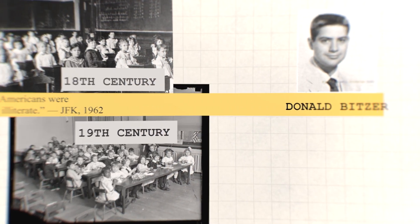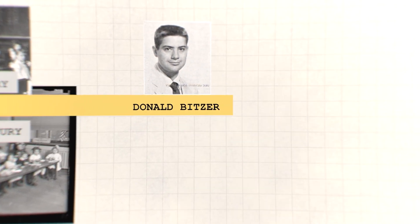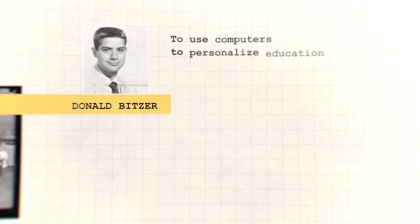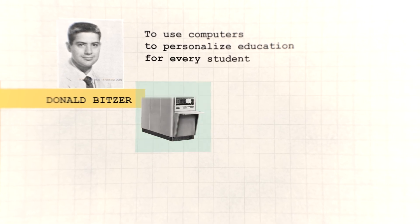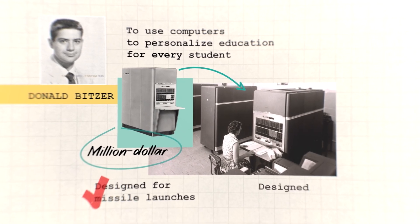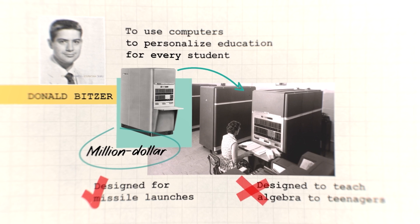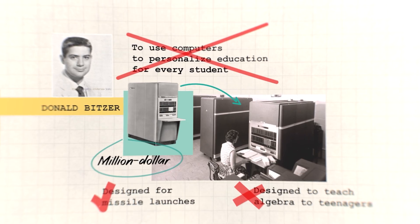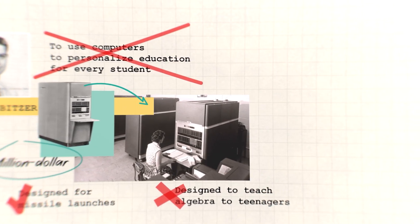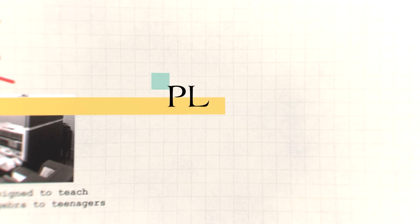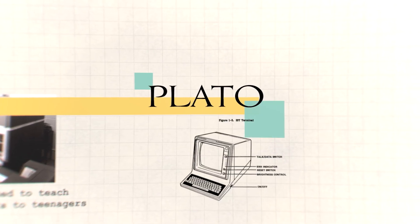A frustrated physics professor proposes a radical idea to a young engineer named Donald Bitzer: to use computers to personalize education for every student. But computers at this point are million-dollar room-size calculators designed for missile launches, not teaching algebra to teenagers. Bitzer's response? To build what no one believes is possible. Plato, the world's first digital tutor. And it's more than just a computer, because it's actually the foundation of modern education in the machine age.